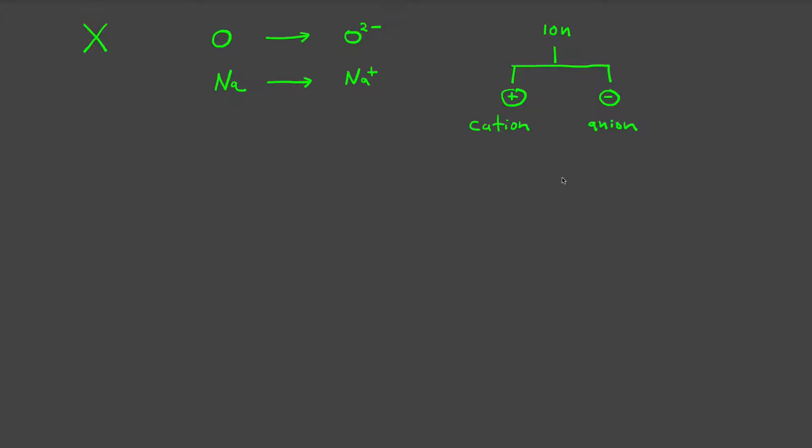So how is it that the charges come about? In essence, they come about by either losing electrons or gaining electrons. In this particular case, oxygen became a minus two charge because it gained two electrons.